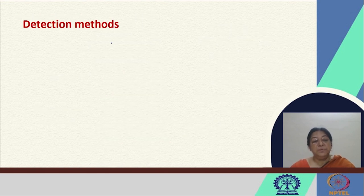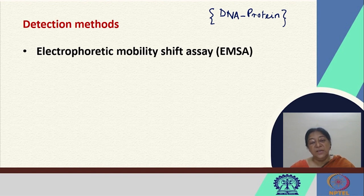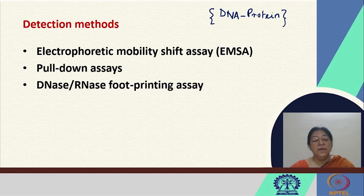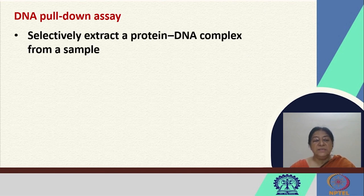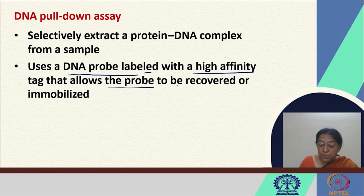In the specific detection methods used to determine whether we have a nucleic acid protein bound complex, there are several approaches. There is the electrophoretic mobility shift assay which we discussed in the previous lecture. There are also pull down assays that can identify DNA protein complex formation, and DNA and RNA footprinting assays. In the DNA pull down assay, there is a selective extraction of a protein DNA complex from a sample using a DNA probe labeled with a high affinity tag that allows the probe to be recovered or immobilized.